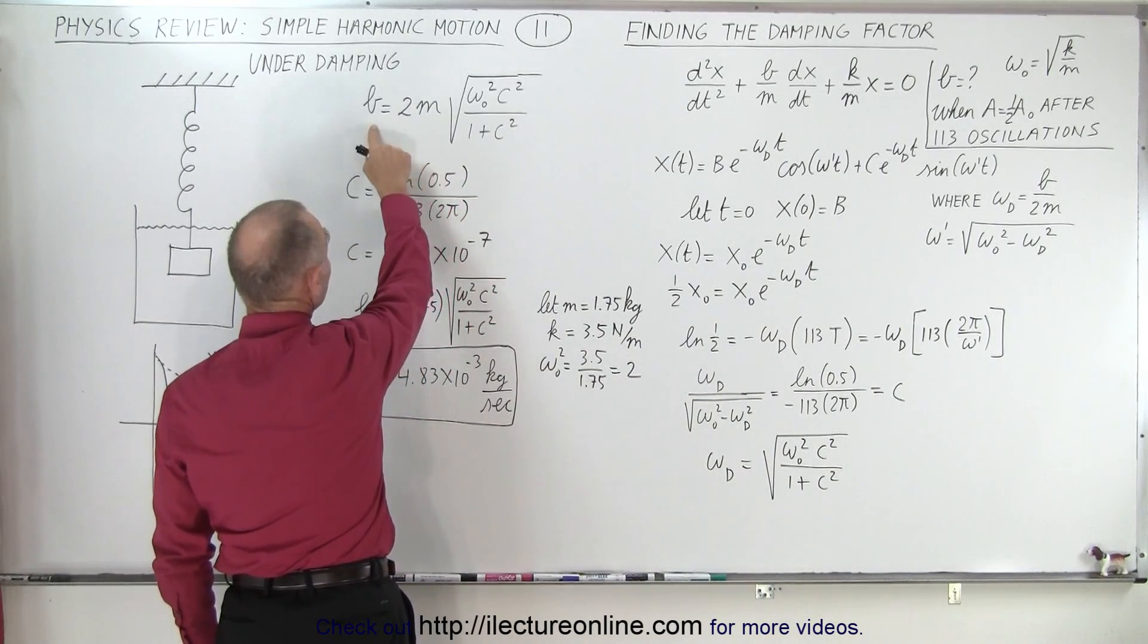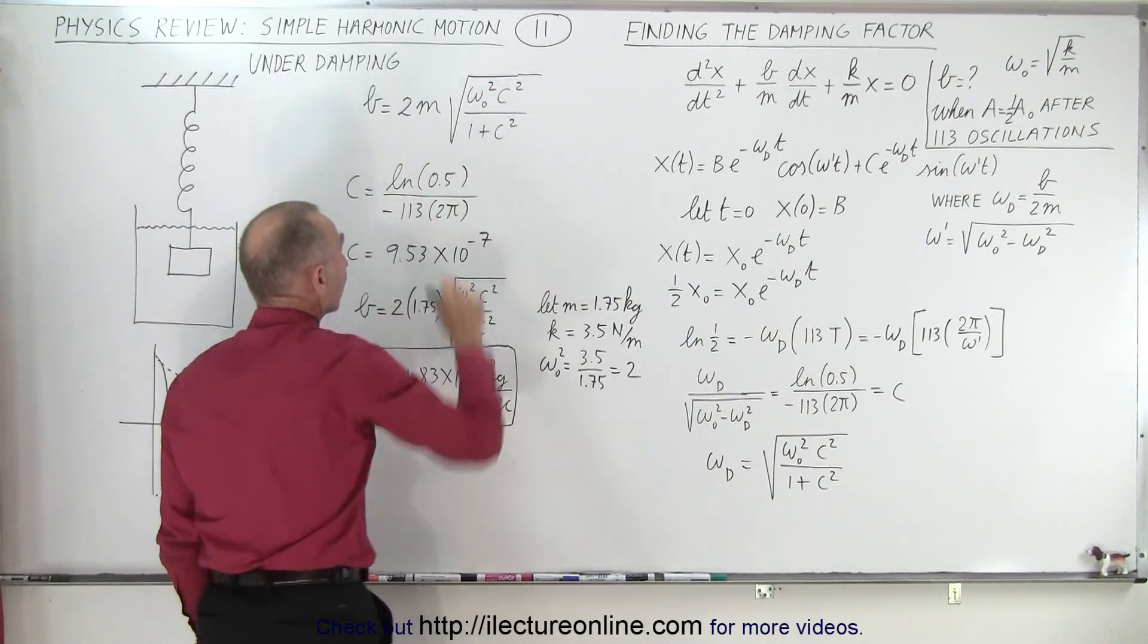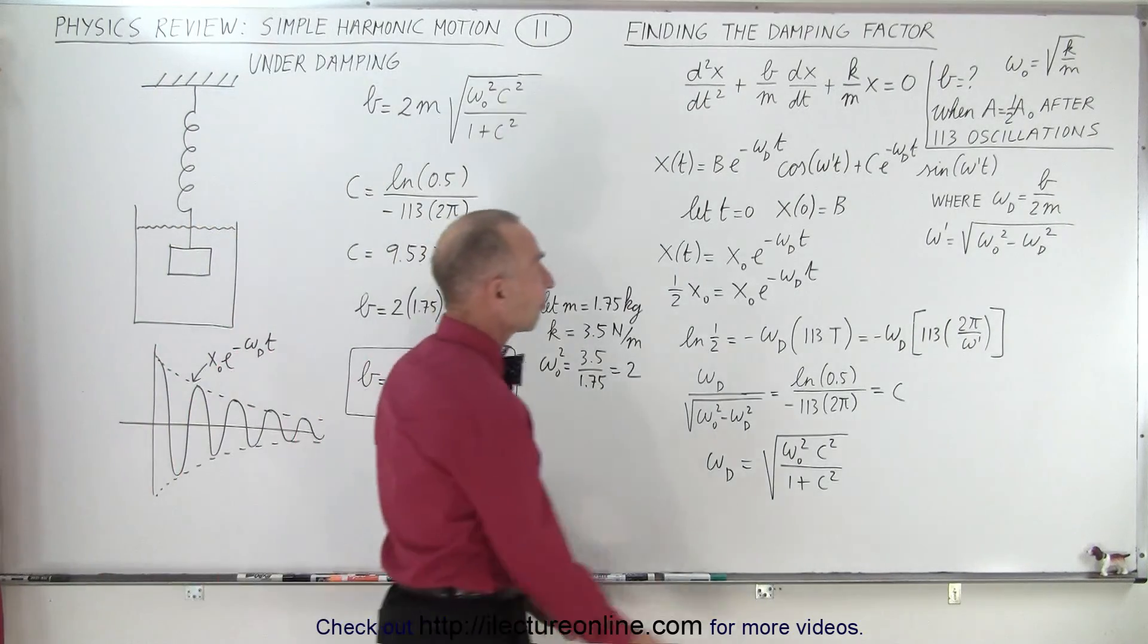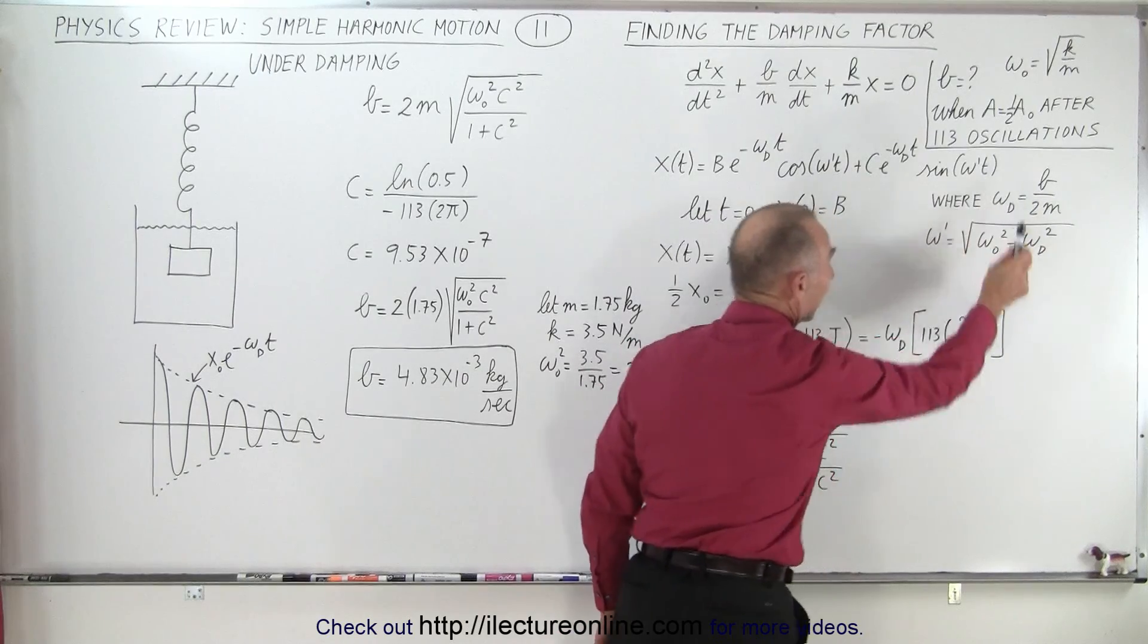realizing now that we can solve for b is equal to 2m times the square root of that, which is what we have over there, which came from this equation right here, 2m times omega sub d.